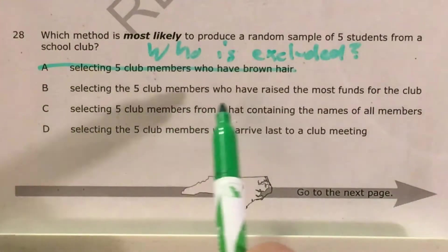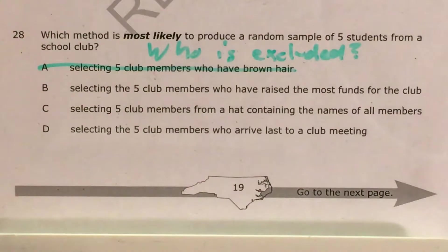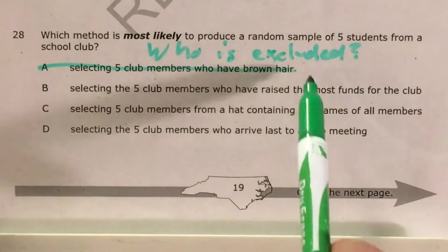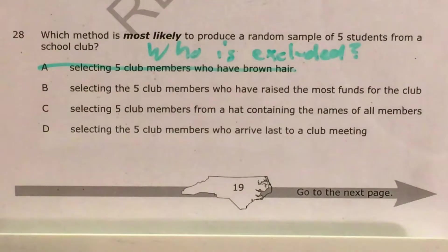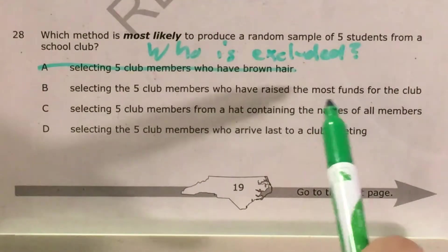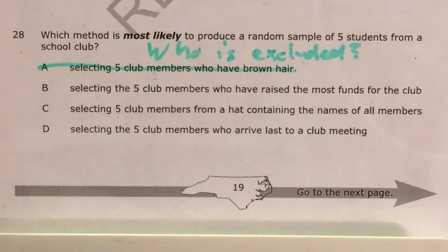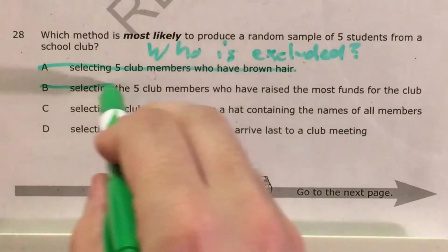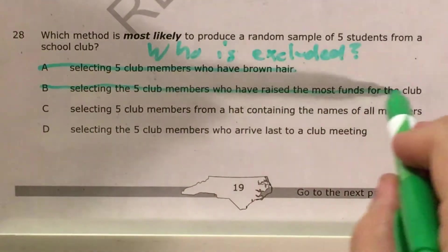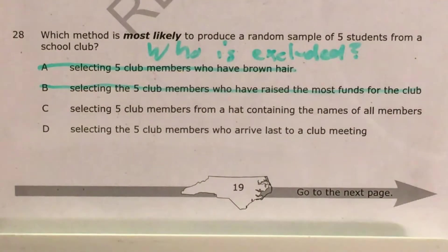Choice B — selecting the five club members who have raised the most funds for the club — that would exclude people who don't raise funds. And here there would be some kind of bias because if you're raising funds for a club, you're likely to be really invested in it and have strong opinions about things. So choice B excludes people who don't raise funds. Choice B is out.